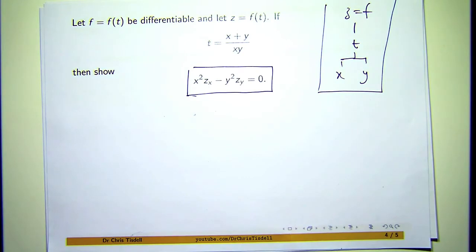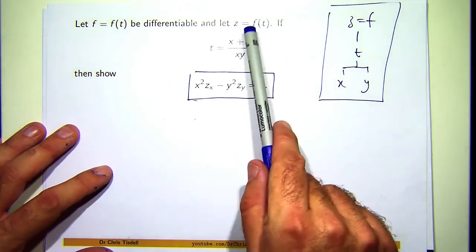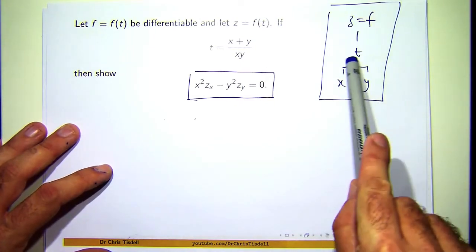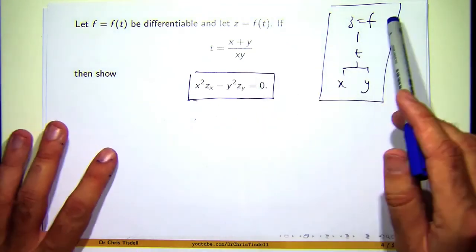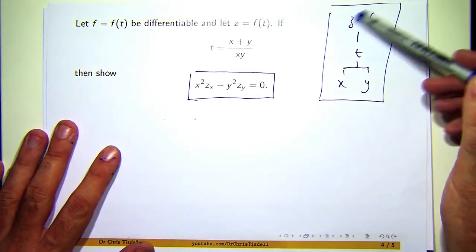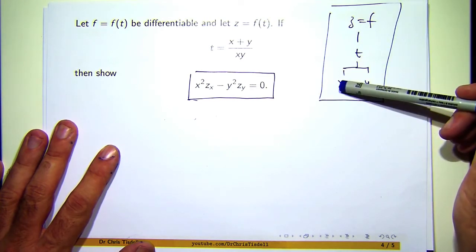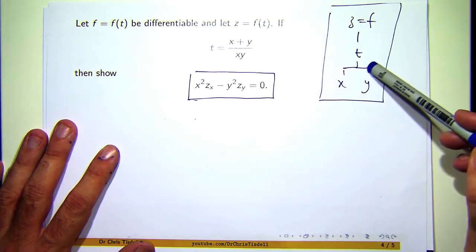And suppose I wanted to calculate the partial derivative of, say, z with respect to x. What I would do is I would start at the top and find all the ways or all the paths down to an x. When I go from letter to letter, I form a derivative. So let me show you that. Let's say I wanted to calculate dz/dx. I'd start up here and I'd go, okay, df/dt times dt/dx. That's it. If I wanted to calculate this, df/dt times dt/dy.